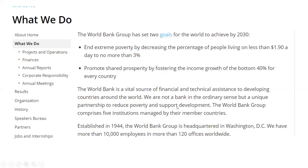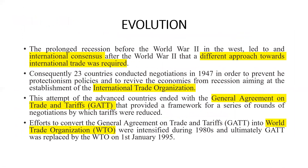So those are the two institutions. Along with this, there is one more important institution — the World Trade Organization, which was set up in 1995. After World War I and then World War II, 23 countries conducted negotiations in 1947 to prevent protectionism policies and revive economies from recession. The attempt of advanced countries ended with GATT — General Agreement on Trade and Tariff — and finally on 1st January 1995, GATT was converted to the World Trade Organization. These three institutions — World Bank, IMF, and WTO — played an important role in the evolution of international business.